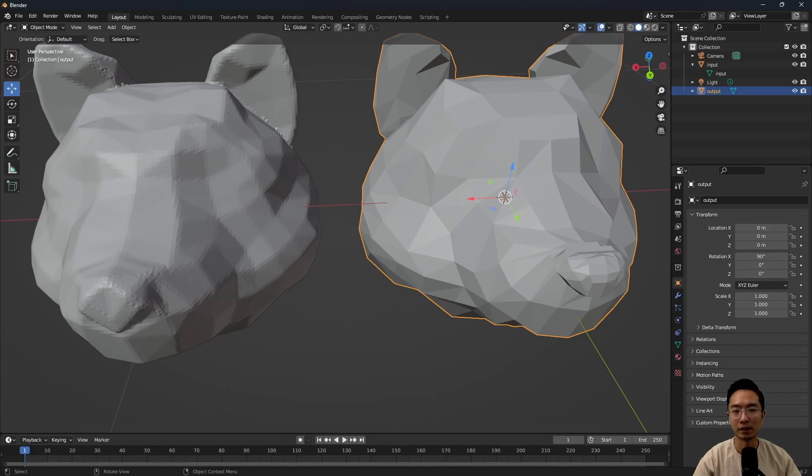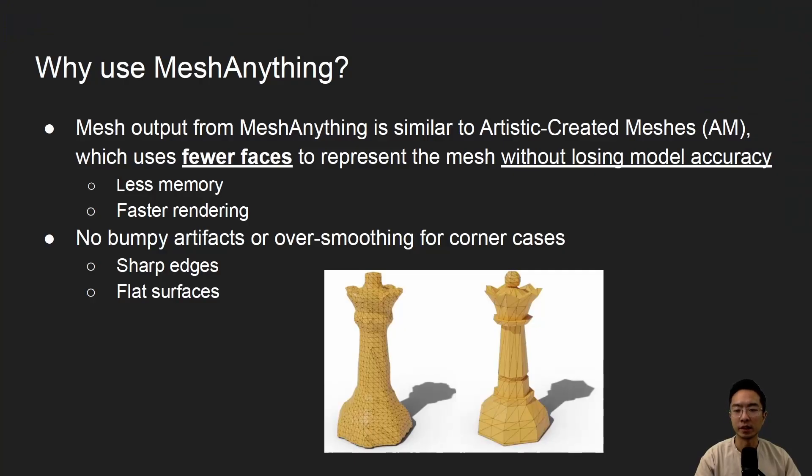So why use Mesh Anything? As we saw earlier, it simplified the faces a lot. Some of the benefits of this is that you could still represent the same Mesh without losing model accuracy. So what does this help us with? It gives us less memory usage and faster rendering. And also later on, if you want to deform your Mesh, it kind of helps to have a more simplified Mesh to work with.